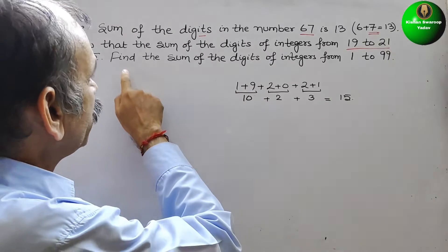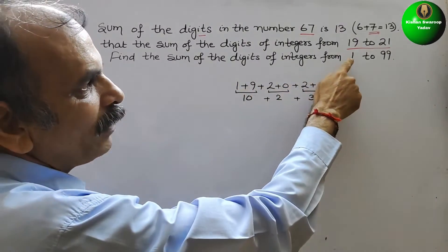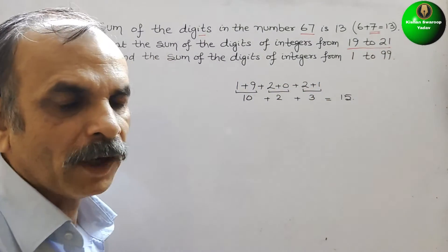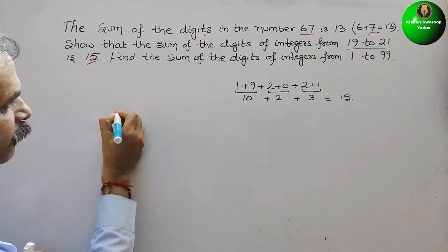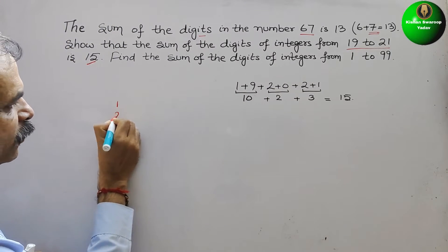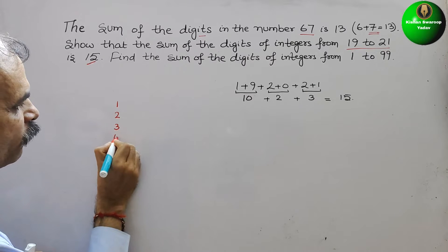Next, what they have told, we have to sum the digits between 1 to 99. How do we have to write? Suppose we start writing 1, 2, 3, 4, 5.